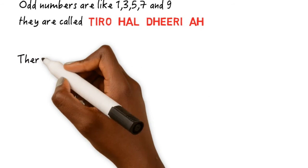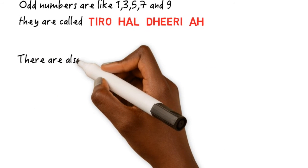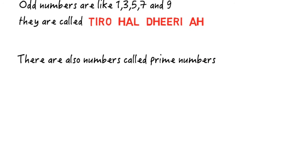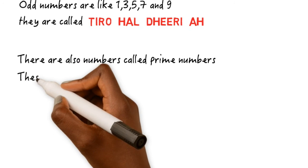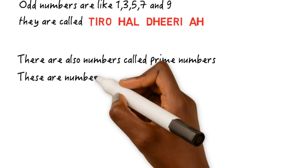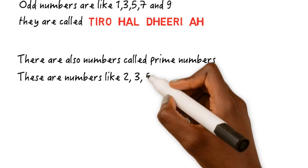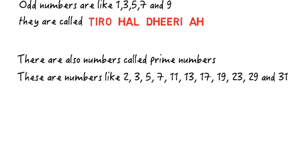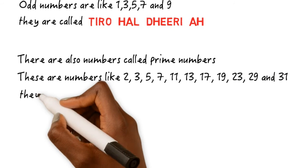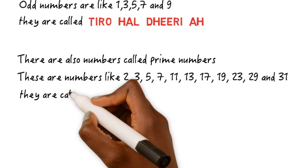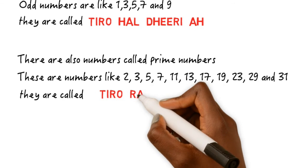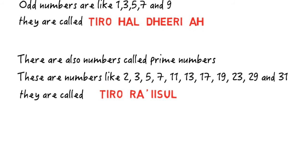There are also numbers called prime numbers. These are numbers like 2, 3, 5, 7, 11, 13, 17, 19, 23, 29, and 31. They are called — actually, I'm not sure about it, but if you know a more suitable term please write it in the comment section below.